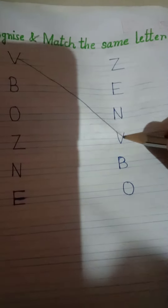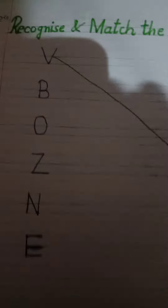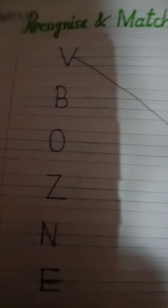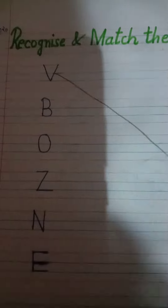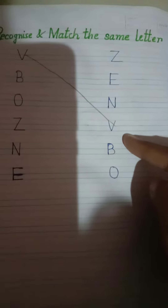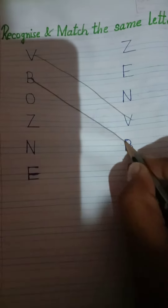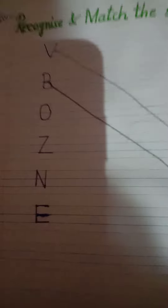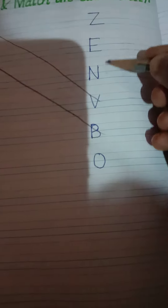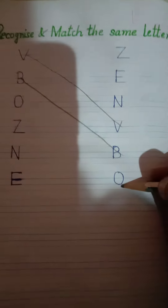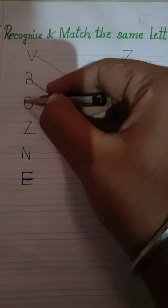One standing line, curve, and one more curve. Which letter is this? It's a letter B. Where is the letter B? Yes, it's a letter B! So match the letter B with B. One circle like this — it's a letter O. Where is the letter O? Yes, it's a letter O! So match the O with O.